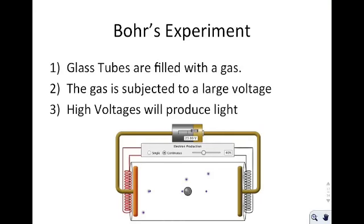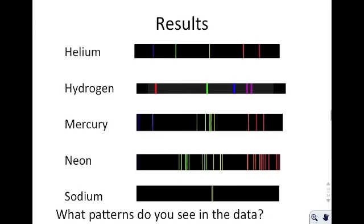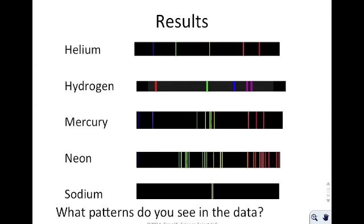Now we have the Bohr experiment. Bohr took glass tubes filled with gas and ran a large electrical current through them. Whenever he did that, it produced light — that's what you see in neon lights. When he did this with different gases, he saw an interesting pattern. For helium only in the tube, you get a particular set of lines. Hydrogen, mercury, neon, and sodium each produce their own pattern. Every element has a different and unique set of colored lines — we call them spectral lines.